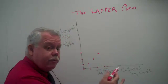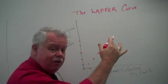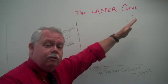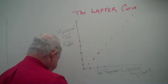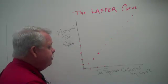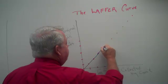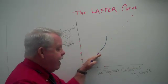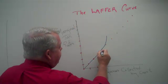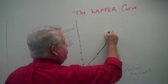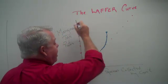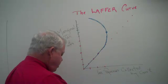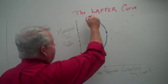But at some point, the argument goes, when you begin to raise tax rates even higher, your tax collections don't continue in that linear, one-for-one fashion. Instead, at some higher rate, your tax collections begin to not grow — not increase as much as they had been. And if you keep raising taxes, your tax collections will reach a maximum, and in fact, at very high — what we call prohibitively high — taxes, your tax collections by government will decrease.